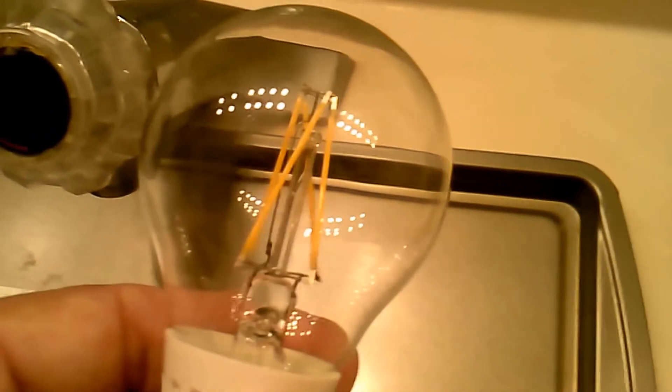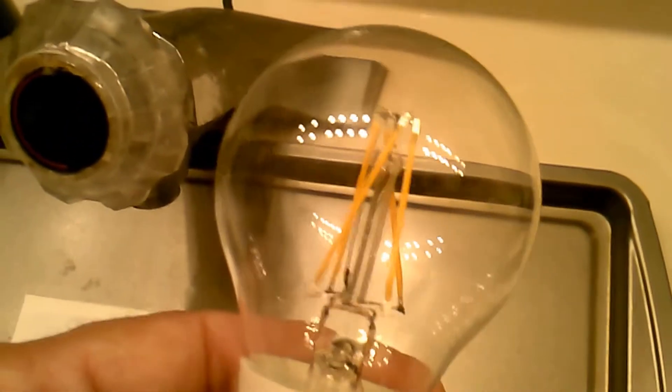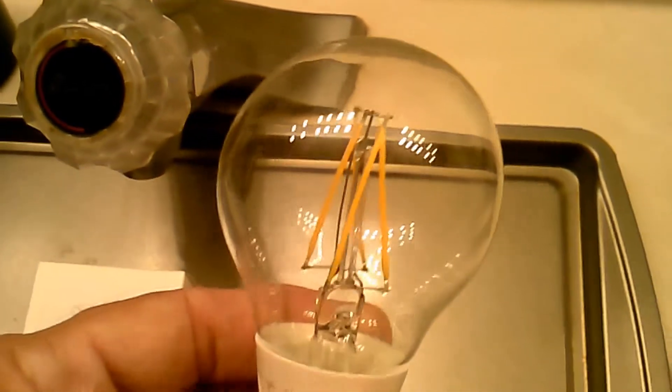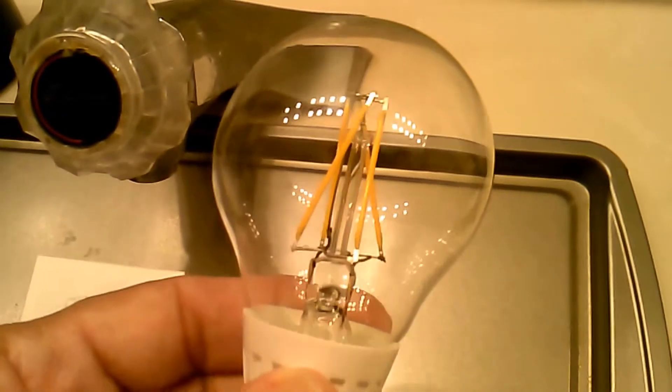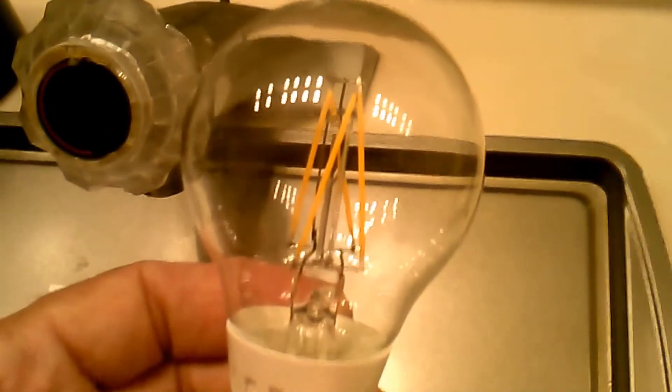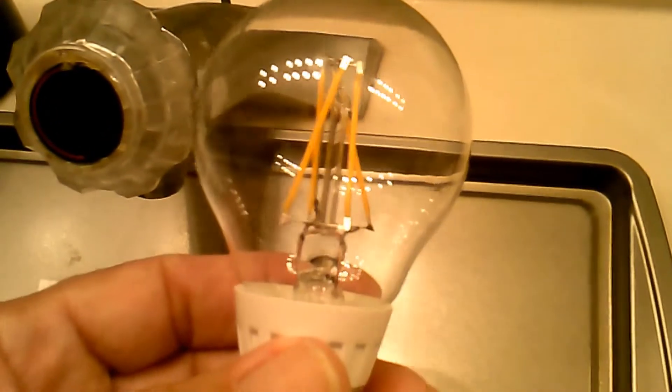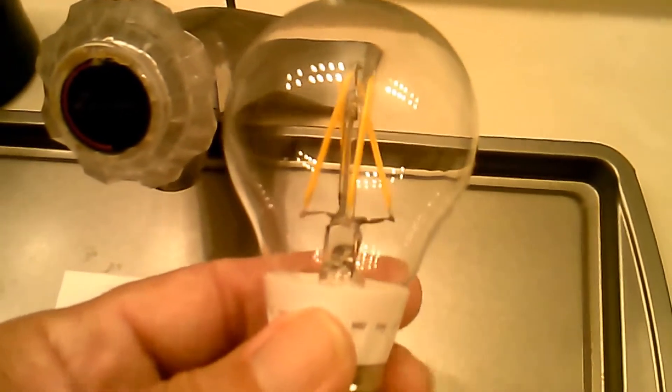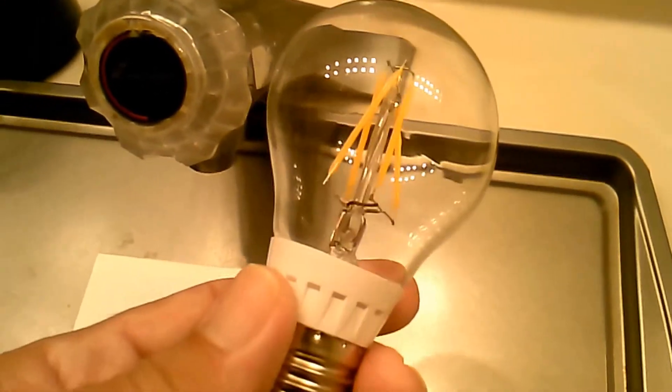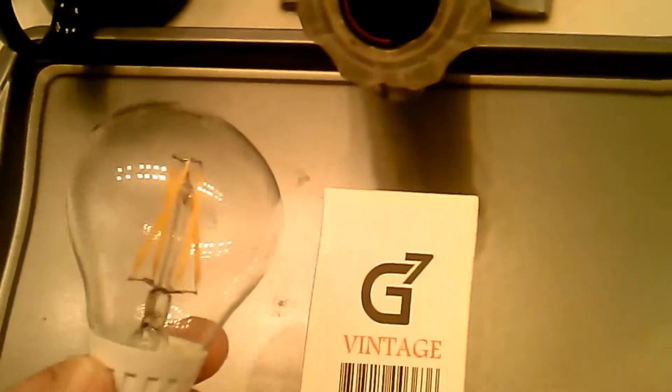The LED strings light up, and it's 3.6 watts with a clear plastic bulb. It's good for 30,000 hours, and the website price is $11.95 for the G7 Vintage.